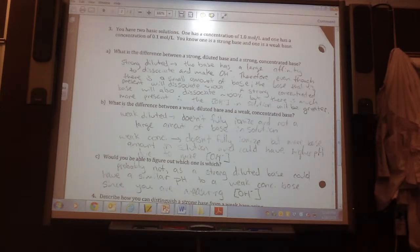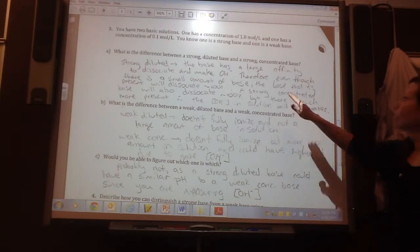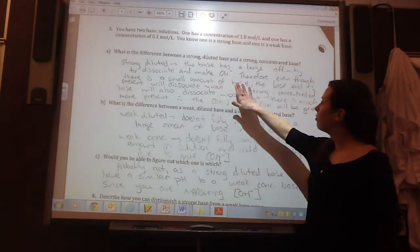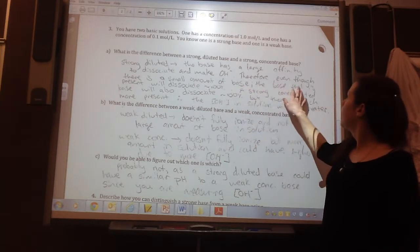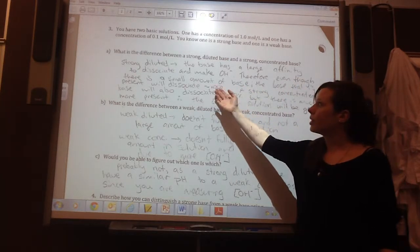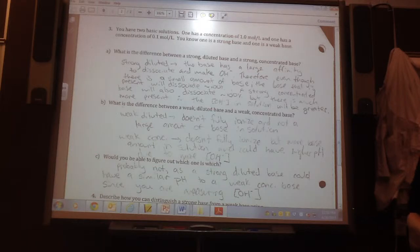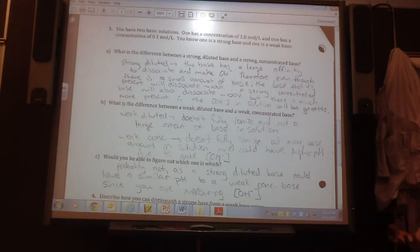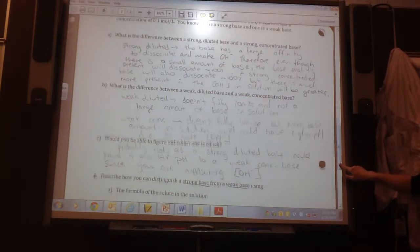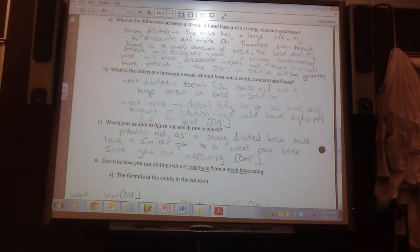So, that's going to make the hydroxide ions, because dissociating is making ions from an ionic compound. Therefore, even though there's a small amount of base, because it's diluted, the base that is present will dissociate 100%, because it's strong. A strong concentrated base will also dissociate about 100%, but there is much more present, therefore the OH concentration in the solution will be greater. So, both are ionizing 100%, but the difference with the concentrated is that there's just more to begin with.